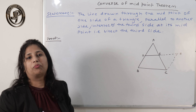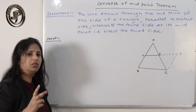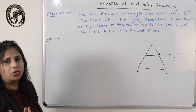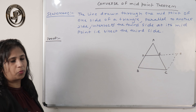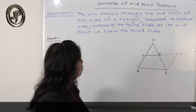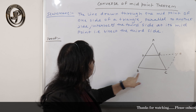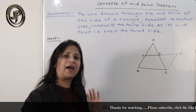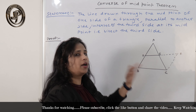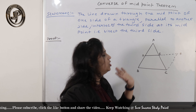Now note the approach for midpoint theorem and the converse of midpoint theorem. In the midpoint theorem, I first proved two triangles congruent and then showed BCFD is a parallelogram. Since this is the converse, I will do it in reverse — so I will first show BCFD is a parallelogram.